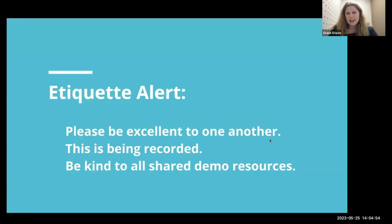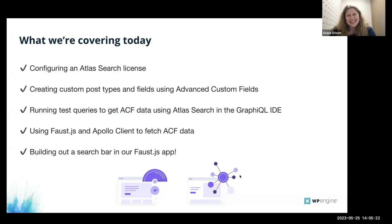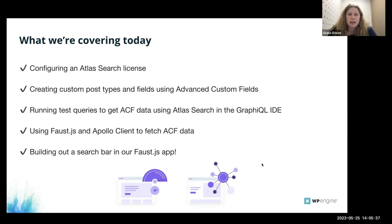A quick etiquette alert: please be excellent to one another. This is being recorded, and be kind to all shared demo resources. We will be sharing the Atlas Search details, but please don't spam them and destroy our demo resources. What we're covering today: we will configure an Atlas Search license, show custom post types and fields using ACF — we pre-built them to save time — run test queries to get ACF data using Atlas Search in the graphical IDE, and then use Faust.js and Apollo Client to fetch that ACF data and build out a search bar on our Faust.js app.